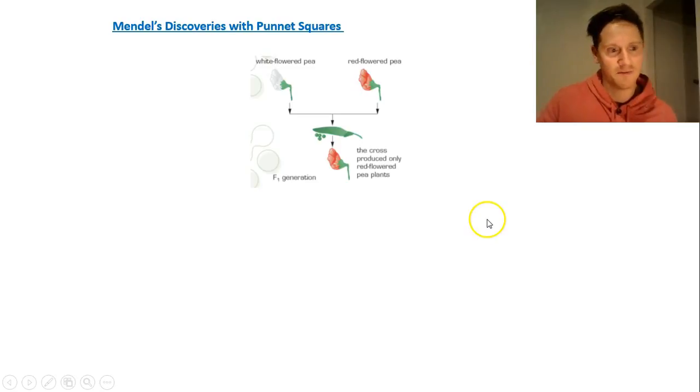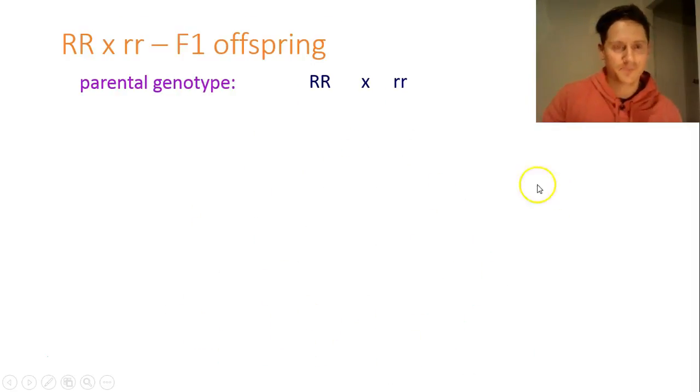So we're going to go back to Mendel's discoveries and use his data to practice our Punnett squares. Mendel's experiments involved the colours of P plants and we had the parent generation here and the F1 generation here. So basically purebred, so homozygous, for white and red were cross-pollinated and we had 100% red being produced. So we'll see how that works with a Punnett square. First of all, the parental genotypes were homozygous because they were purebred. Purebred means homozygous. You have the same copy of each allele.